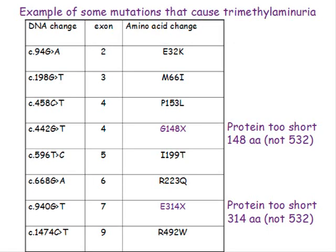Here are some examples of mutations that cause trimethylamine urea — there are more than this. The NADPH and FAD binding changes are quite tricky to identify in terms of which binding site is affected. But for the two changes shown in purple, we know what's happened. G148X means protein synthesis started but stopped too early, ending up with a protein of 148 amino acids instead of 532 — obviously unable to do its job. And E314X means the protein is again too short, with synthesis stopping at amino acid 314, not 532.